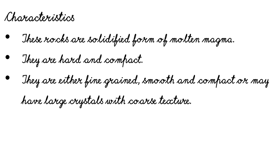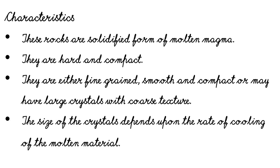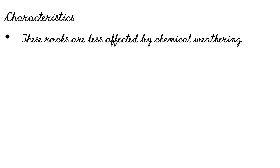Third, they are either fine-grained, smooth and compact, or may have large crystals with coarse texture. When the magma solidifies, it forms grains — that's why they are granular and crystalline. When quick solidification takes place, especially in acidic rocks, the rocks are formed in crystals. The size of the crystal depends upon the rate of cooling of the molten material. The magma cools slowly inside the Earth; when it solidifies it allows minerals to form very large crystals — so intrusive rocks always have very large crystals.